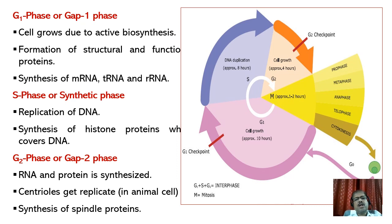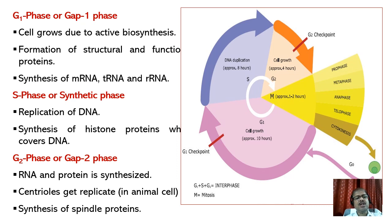The events which occur during different phases — also called checkpoints — in the cell cycle: during G1 phase, the cell grows due to active biosynthesis, and formation of structural and functional proteins takes place.